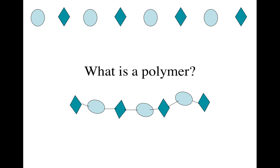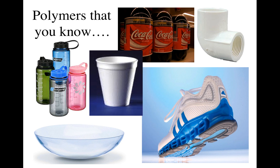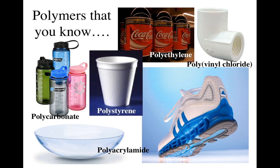Today's topic is polymers. All these things are made out of different polymers: the Coke bottle, styrofoam cup, bottom of someone's shoe, the Nalgene water containers, and this PVC pipe up on the top. The Coke bottles are made of what we call polyethylene, and PVC — which is why it's called PVC — stands for polyvinyl chloride. The Nalgene water containers are made out of a polycarbonate.